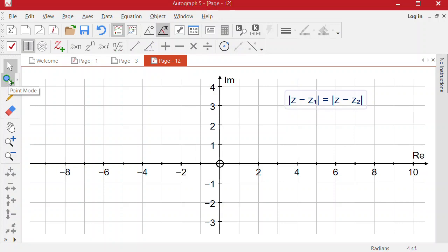I'm going to put in two complex numbers using the point mode. So let that be z1 and z2.